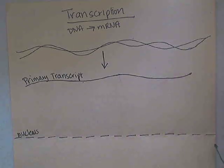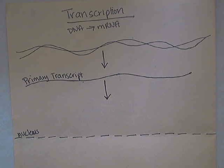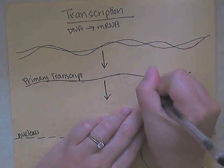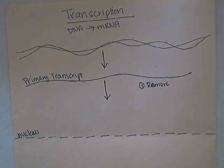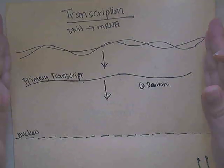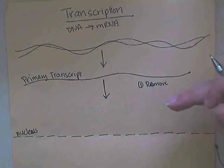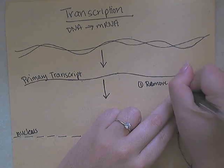Think of the primary transcript as a rough draft. This rough draft is then going to be edited before it's allowed to leave the nucleus, and there are three main things happening in the editing process, or what we call transcription processing. Number one, we are going to remove sections of DNA that don't actually code for anything — that don't code for the proteins themselves. This gene, which is just a segment of DNA, is copied and made into that primary transcript out of mRNA. Then we are going to remove those non-coding sections called introns.